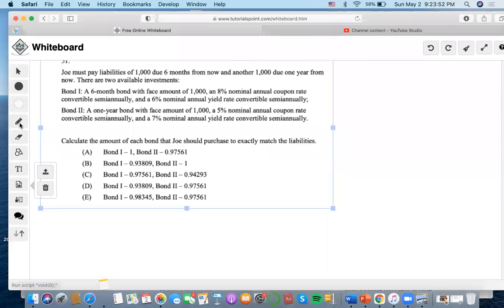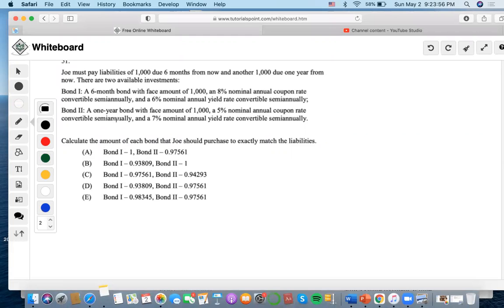This is an immunization with exact matching problem. Joe must pay liabilities of $1,000 due six months from now and another $1,000 due one year from now. These are the liabilities that need to be paid out.